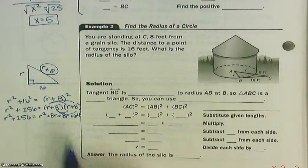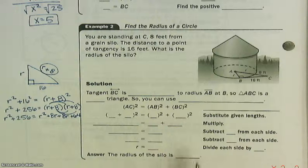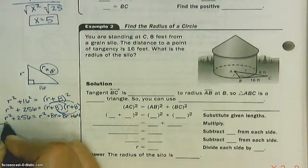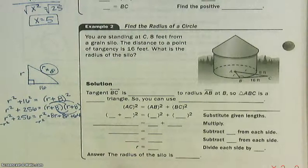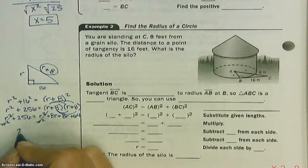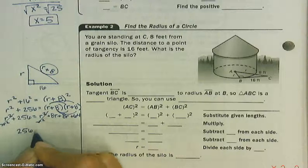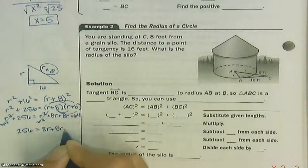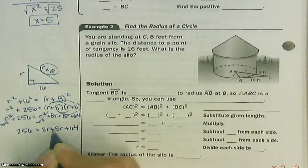Now, this is an algebra problem that you can do. What I see, first of all, is that there's an R squared on both sides. So, if I subtract R squared from both sides, they're going to cancel. So, yay, 256 equals 8R plus 8R plus 64. Well, I can combine my like terms.